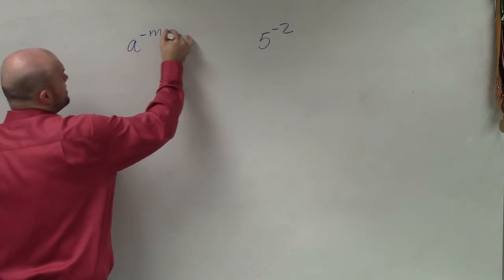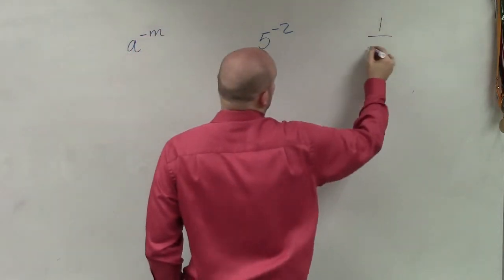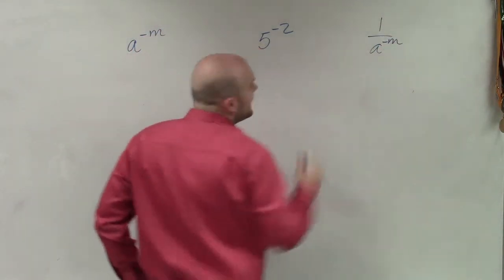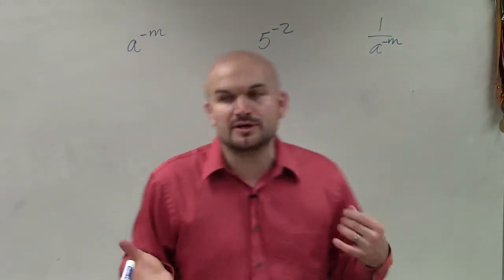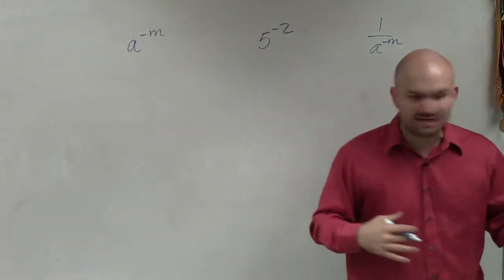If you have a to the negative m, or you have 1 over a to the negative m, anytime you have a negative exponent, what we're going to do is use the reciprocal to write it as a positive exponent.